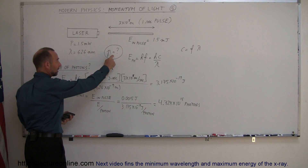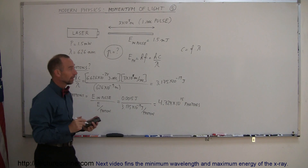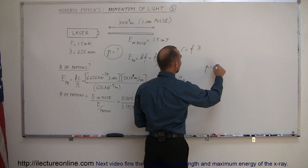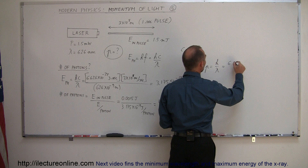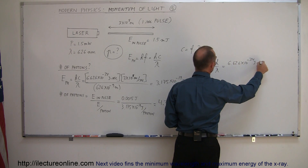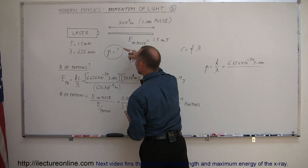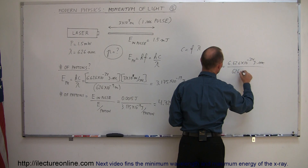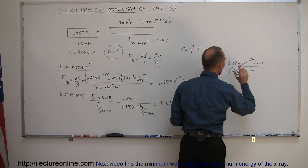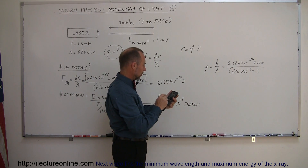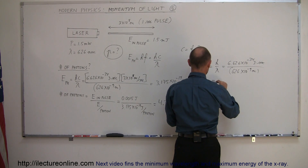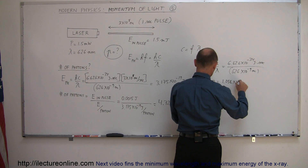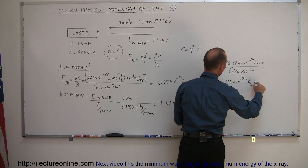Since we're looking for momentum, we now calculate the momentum in each photon. We've learned that momentum equals h divided by the wavelength — Planck's constant divided by the wavelength. So this equals 6.626×10⁻³⁴ joule·seconds divided by 626×10⁻⁹ meters. For this particular wavelength, the momentum equals 1.058×10⁻²⁷ kilograms·meters per second.